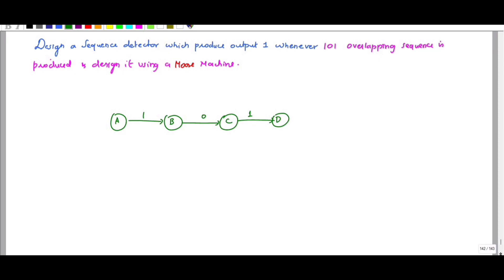Whenever 1-0-1 is detected, the output is 1. The output is written inside the circle. The value of A is 0 — since the first bit is 1, you start with 0. Next, B value is 1, C value is 1-0, and D value is 1-0-1.